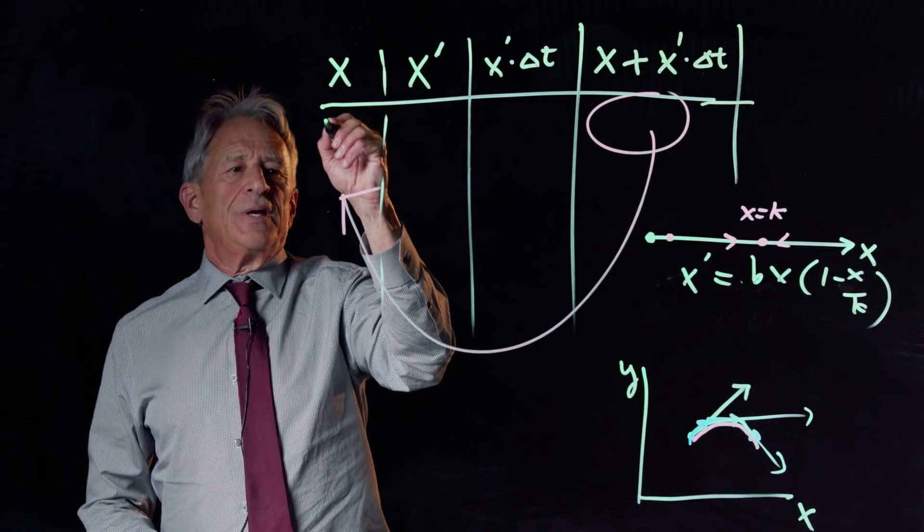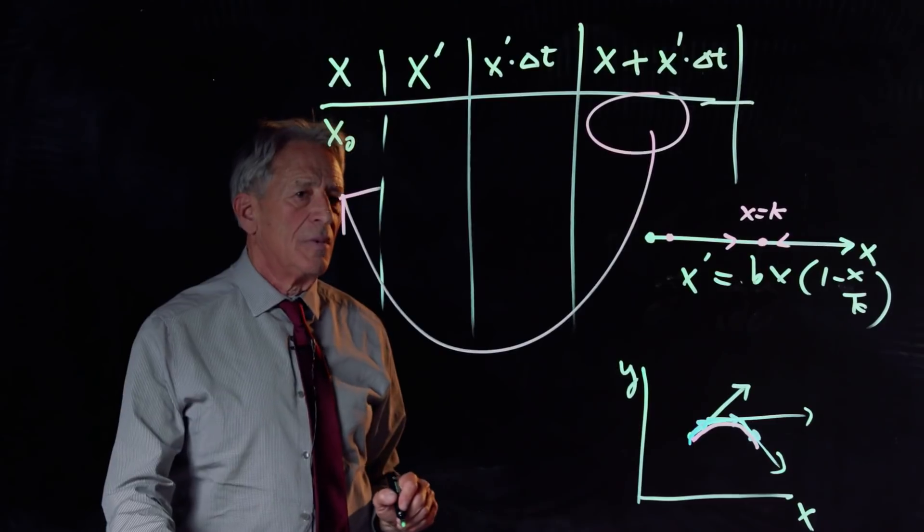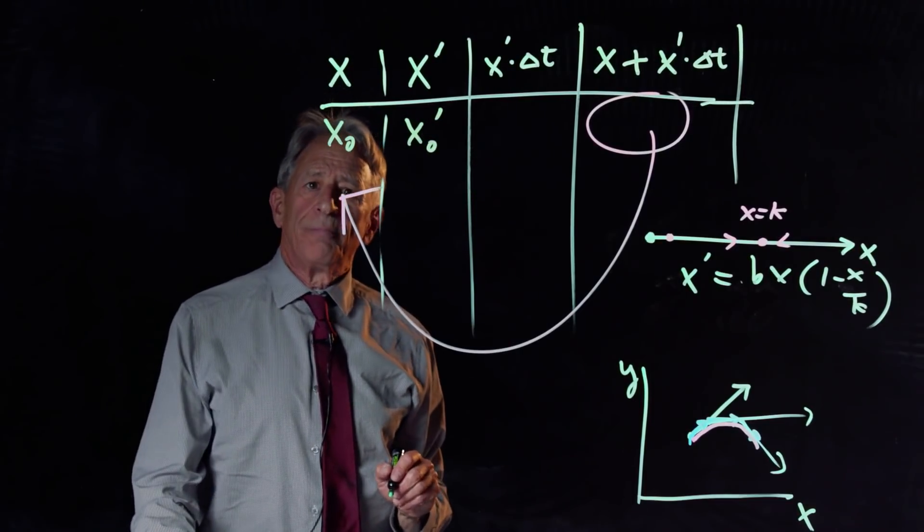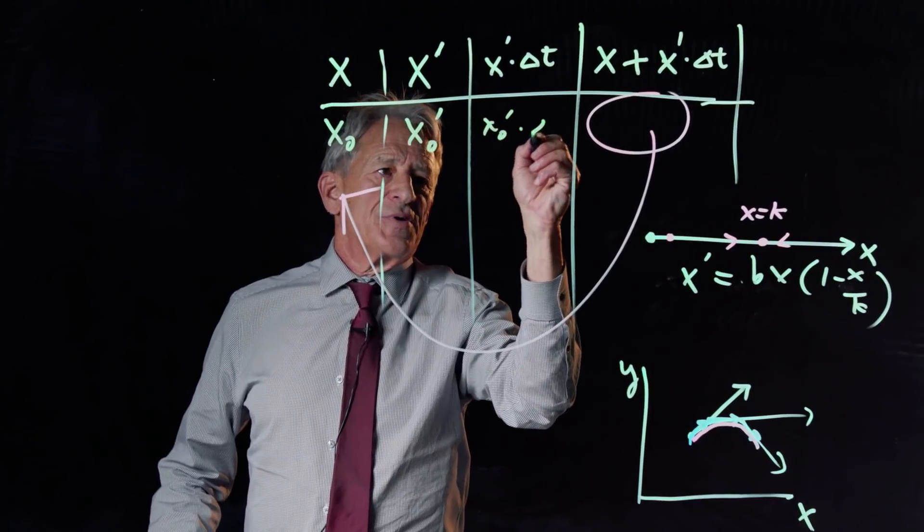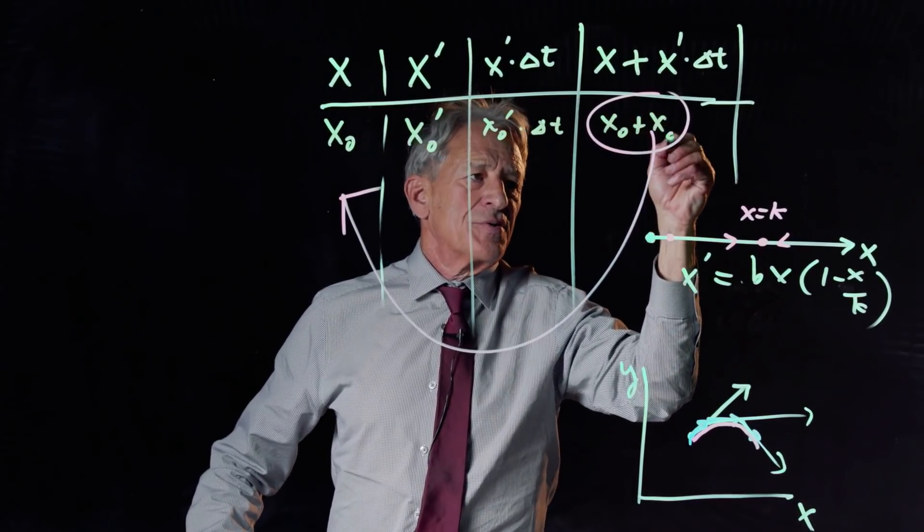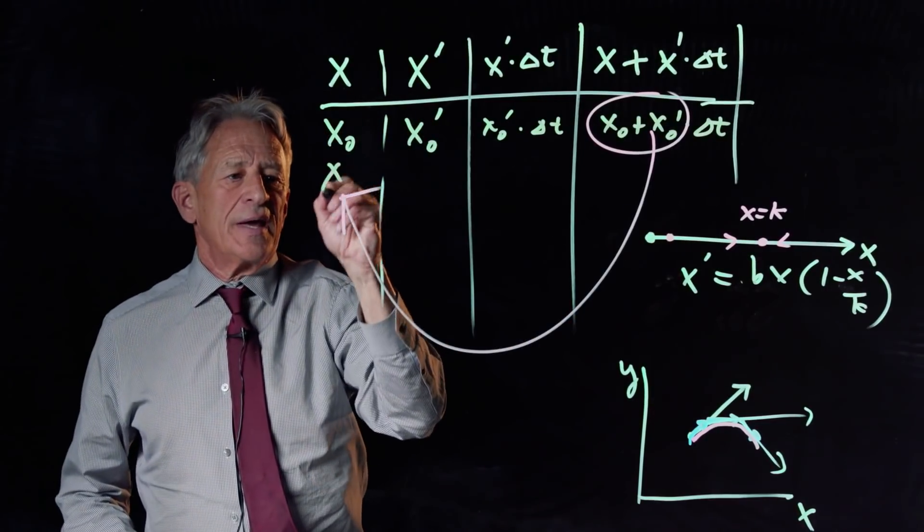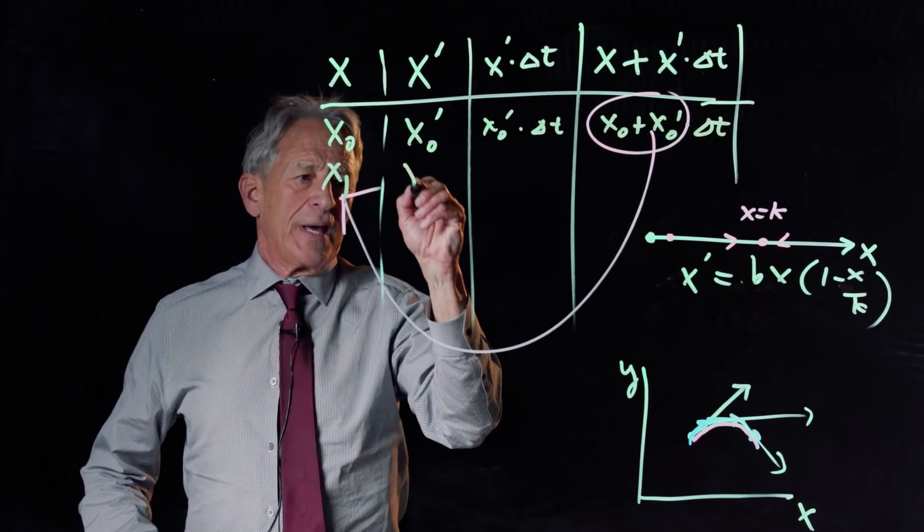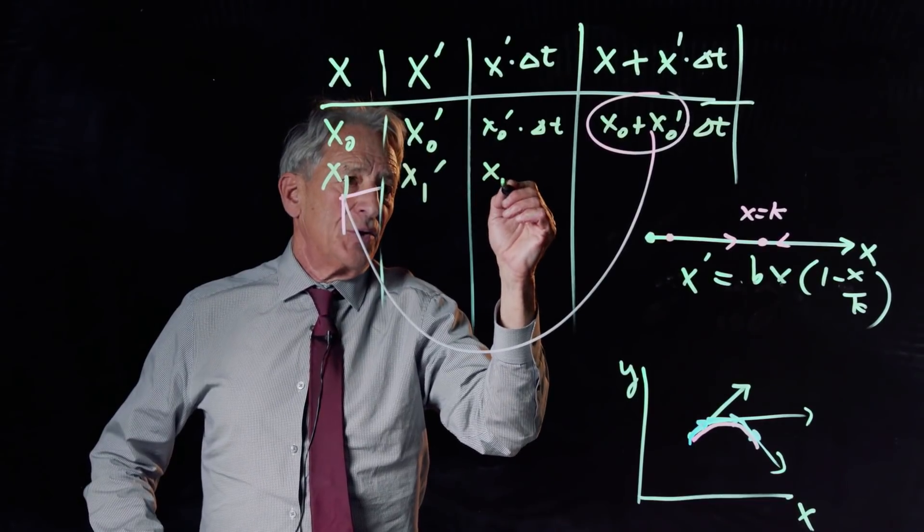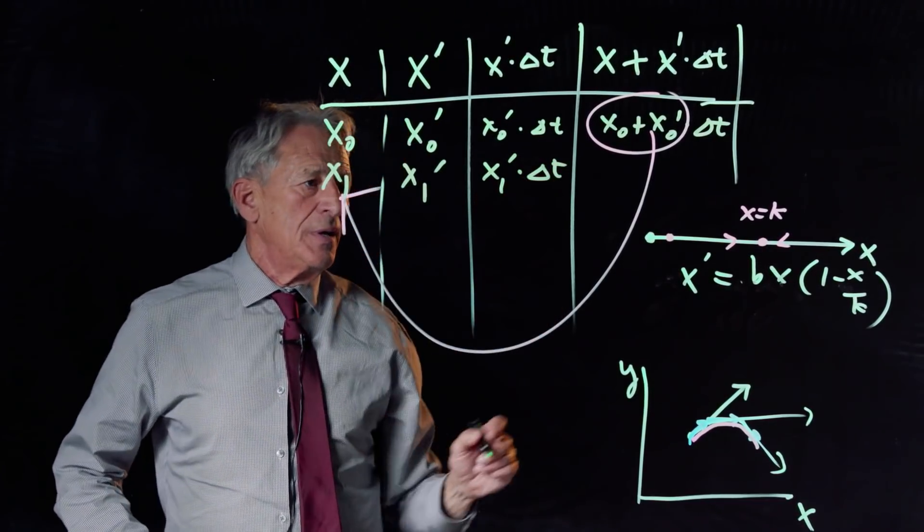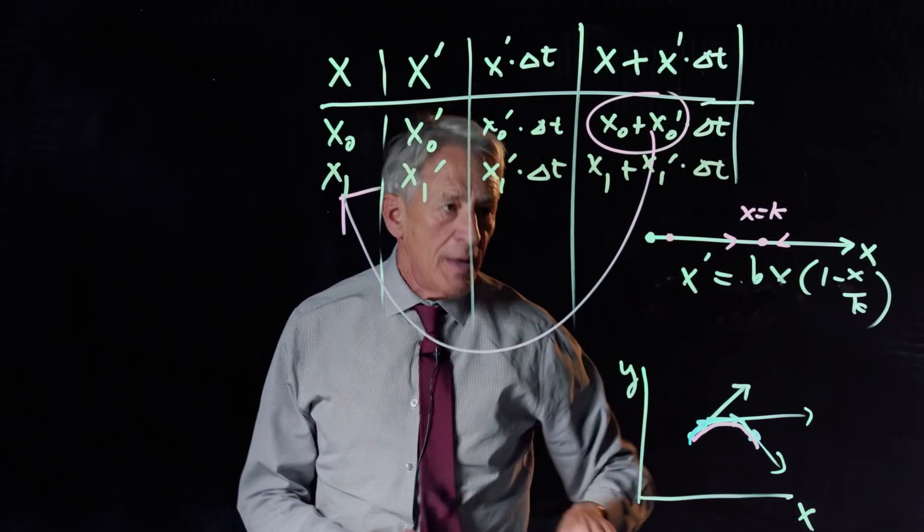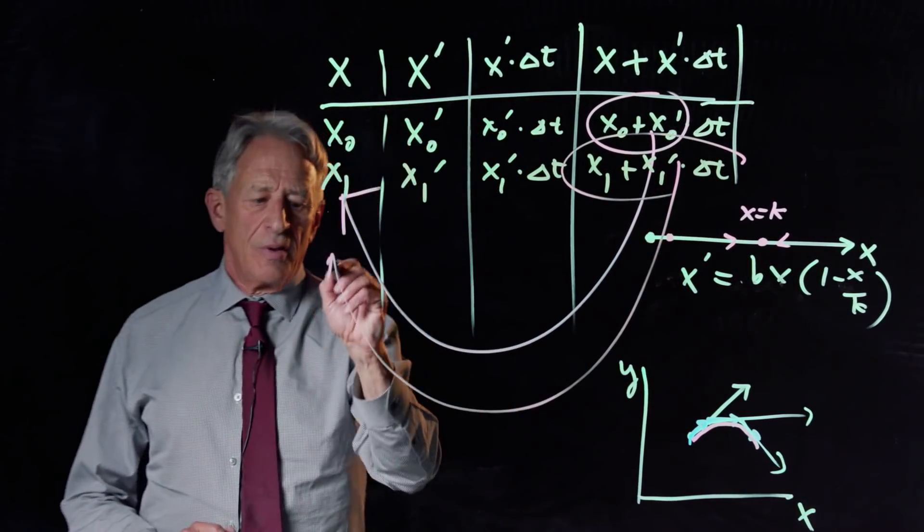So, we're going to begin at x0. At x0 we have, go to the vector field and calculate x0 prime. Then we have x0 prime times delta t. And then we have x0 plus x0 prime times delta t. And that is x1. Then we calculate x1 prime by plugging x1 back into the formula. Then we calculate x1 prime times delta t. And then we add that to x1. x1 plus x1 prime times delta t. And this becomes x2.